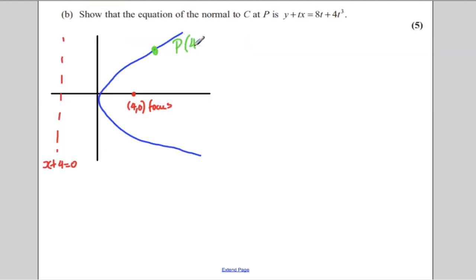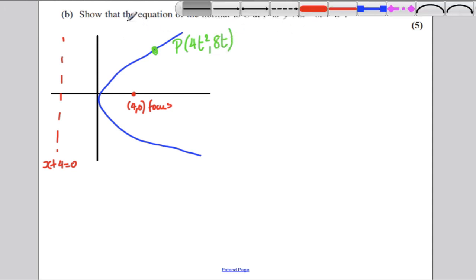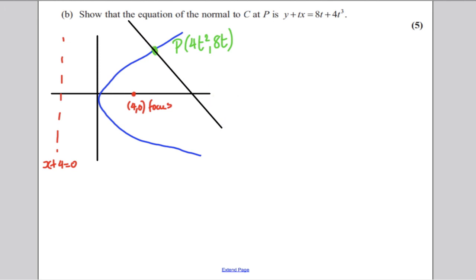And we want to work out the equation of the normal, so we want to work out the equation of that line there. And to do that, we are going to use the equation of the tangent at first. So, the equation of the normal. Any straight line has equation y subtract y1 is m times x subtract x1.